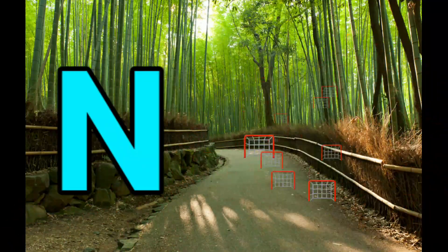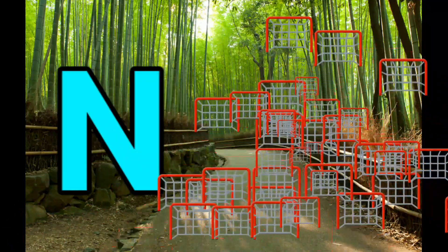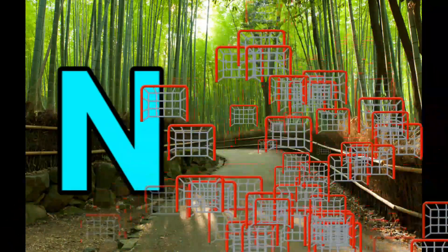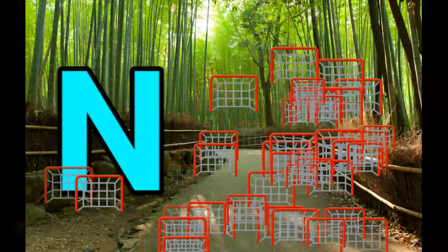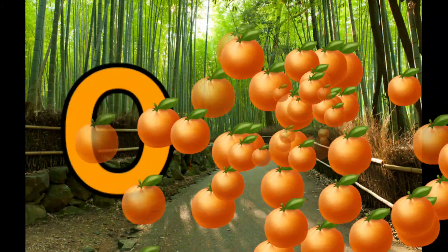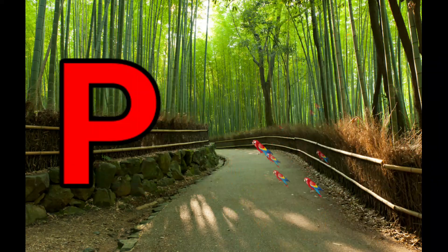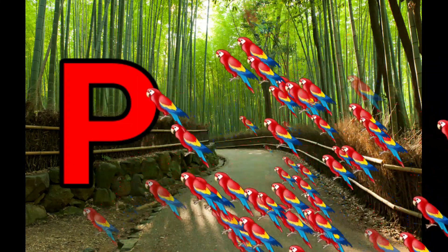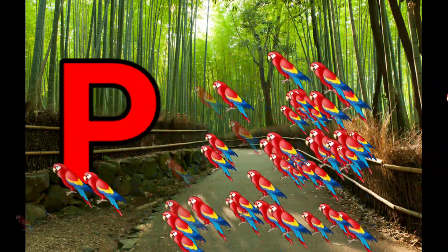N is for Net, N-N-Net. O is for Orange, O-O-Orange. P is for Pet, P-P-Pet.